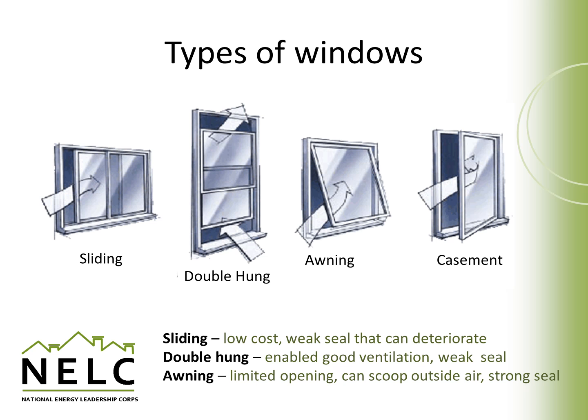Awning windows are often used in multi-story buildings, but sometimes in single family homes. They open up with the hinge at the top and they can scoop outside air that's passing along the outside of the house. Because of how they're closed, they actually have a fairly strong seal and have lower air leakage than sliding or double hung windows.